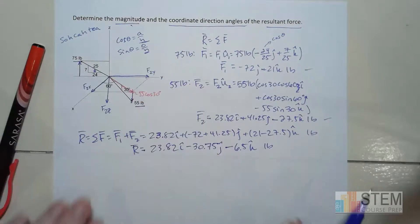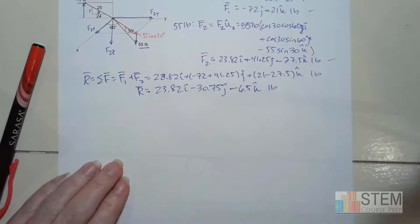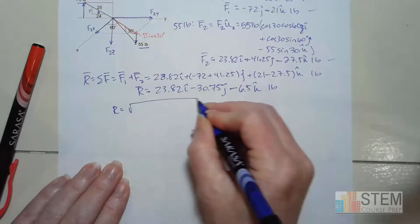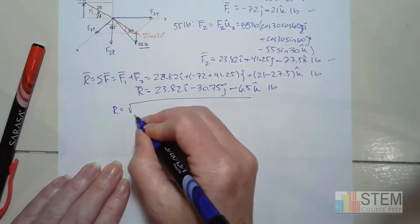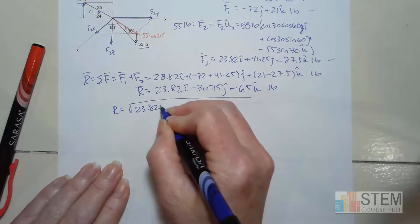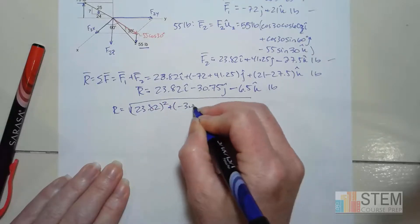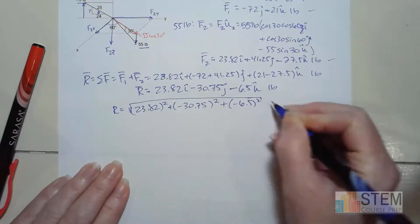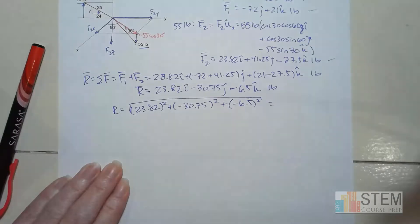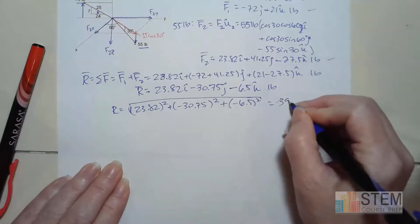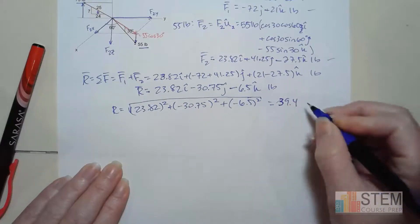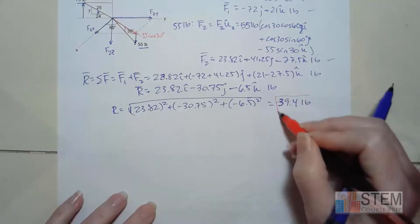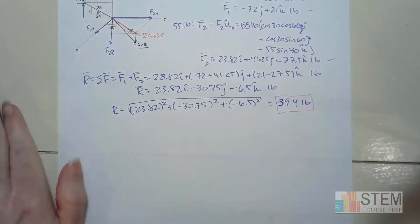To find the magnitude, we just take the square root of the sum of the squares. So we've got the square root of 23.82 squared plus negative 30.75 squared plus negative 6.5 squared. And we get 39.4 pounds. That is the magnitude of our resultant.